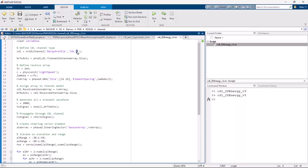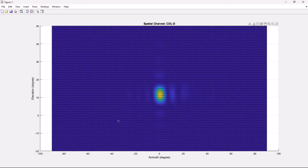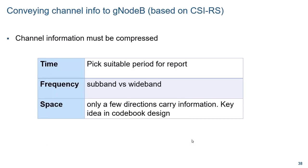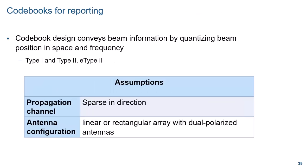This is even more striking in the case of a line of sight channel, such as CDL-D. So we have seen that the channel information reported by the UE to the gNodeB must be compressed, and we are going to do so in three ways: time, by periodically reporting new information; frequency, by providing either wideband or more detailed subband information; and space, since only a few directions carry information — and this is what the standard exploits in codebook design. Codebooks were designed to efficiently report spatial and frequency information. Three types are present in release 17 of the standard: Type 1, Type 2, and Enhanced Type 2 or E-Type 2.